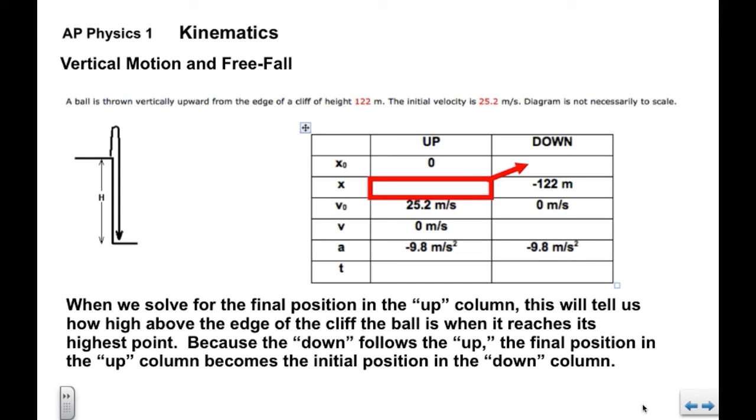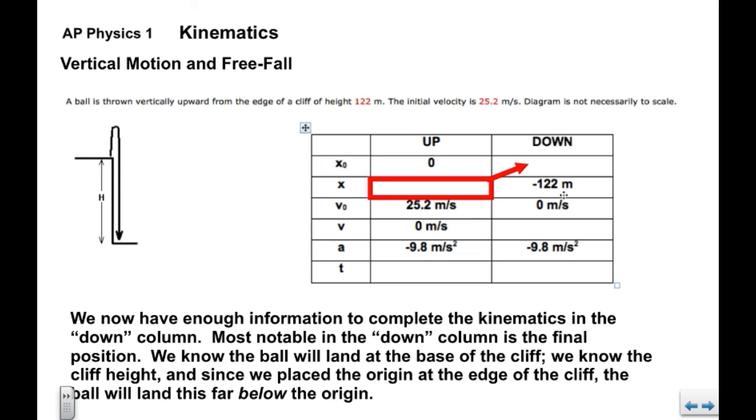Now, once we do the kinematics, solve for the final position, solve for the time. The down follows the up, so the principles of multiple motion apply. We're going to take this final position in the up column and it goes immediately into the down column. Notice that again we have an initial velocity of zero meters per second because the down follows the up. So the final velocity in the up column goes into the initial velocity in the down column. We also know that when it lands, it's going to land whatever the cliff height is which is given. It's going to land that far below the origin. So we have a negative 122 for the final position which makes sense because it lands at the base of the cliff.